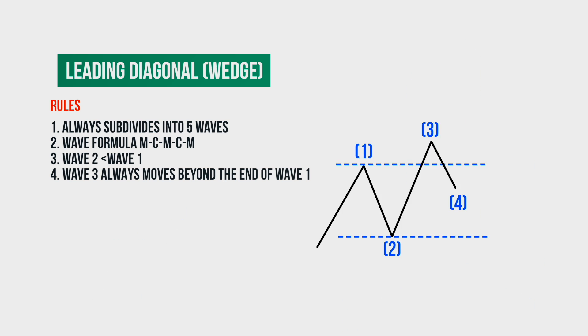The fifth rule distinguishes the leading diagonal from the impulse. According to this rule, the fourth wave of the leading diagonal ends in the zone between waves one and two. In other words, if you draw horizontal lines through the tops of waves one and two, then wave four will end between these horizontal lines.